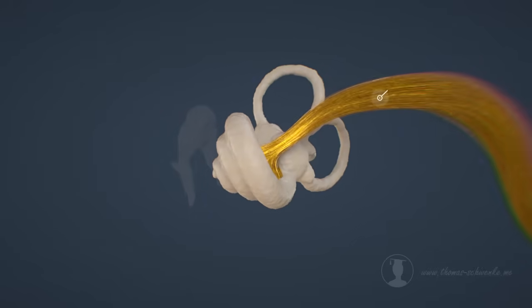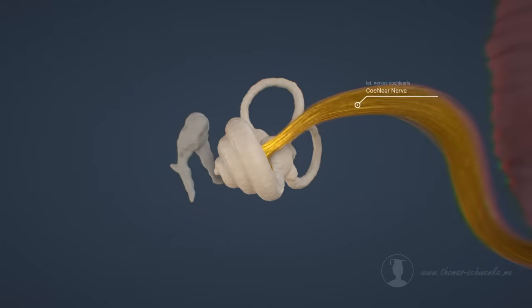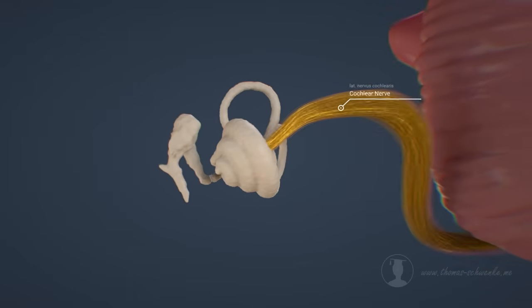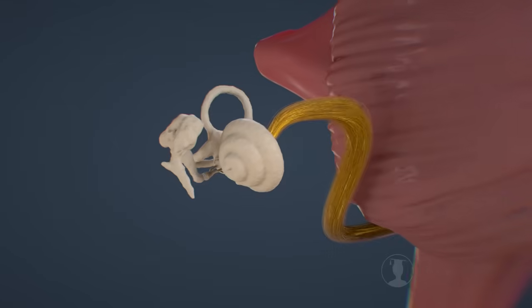With the help of the cochlear nerve, the electrical signals reach the brain stem, where nerve cells are located that process these electrical signals.